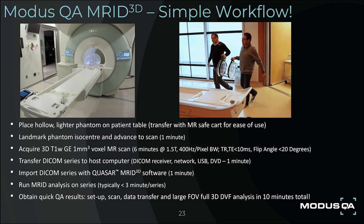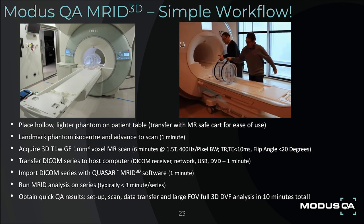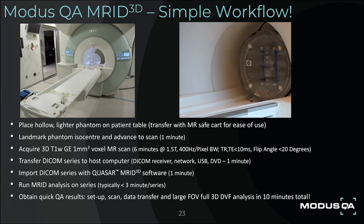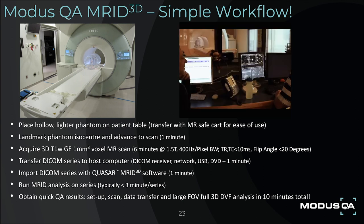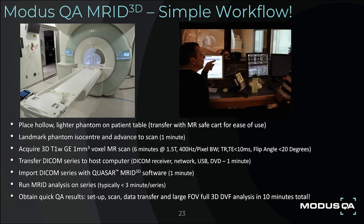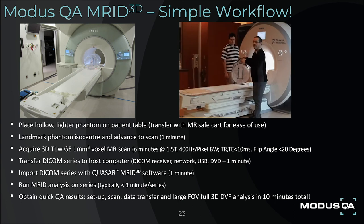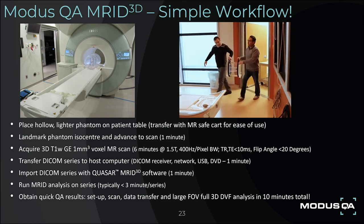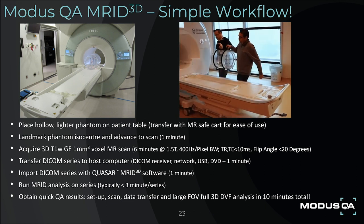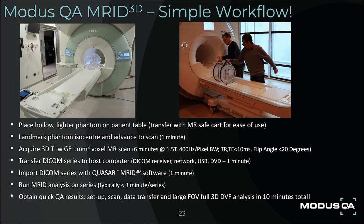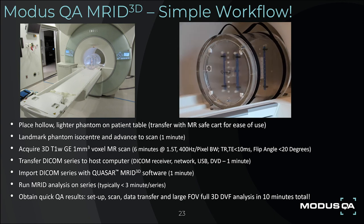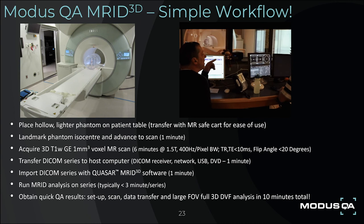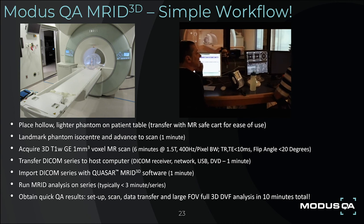The MODIS QA MRID 3D Geometric Distortion System is characterized by very simple workflow. Place the hollow, lighter phantom on the patient table, transferring it with the MR-SAFE cart for ease of use. Landmark the phantom to isocenter and advance the scan in under one minute. Acquire a 3D T1-weighted gradient echo scan, typically 6 minutes at 1.5 T with a relatively moderate bandwidth, short TR and TE times, and a low flip angle. Transfer the DICOM series to a host computer using the built-in DICOM receiver, network, USB, or DVD — all in under a minute.